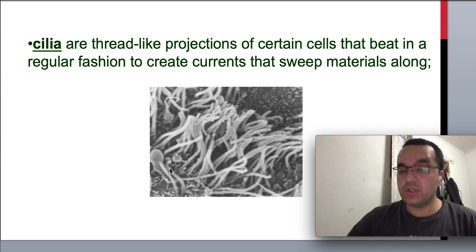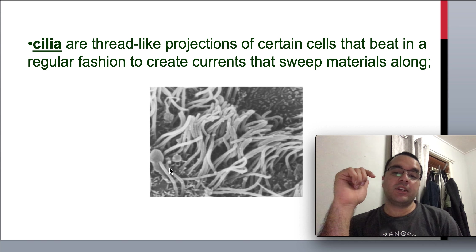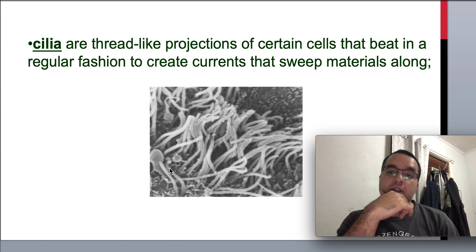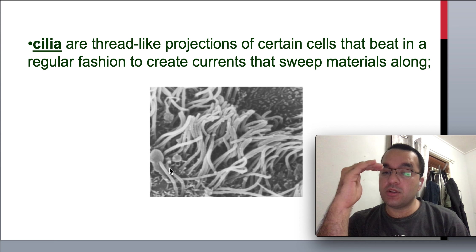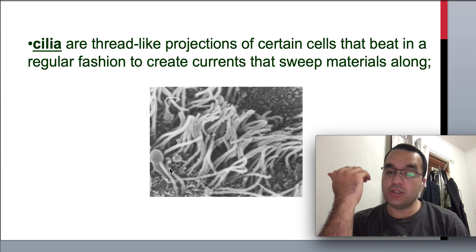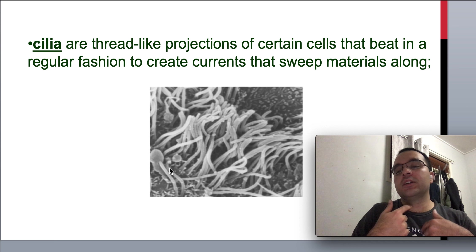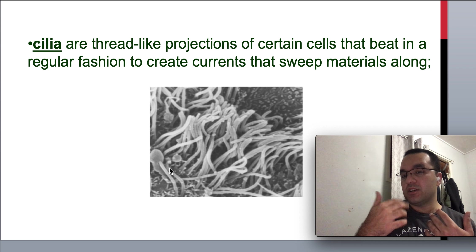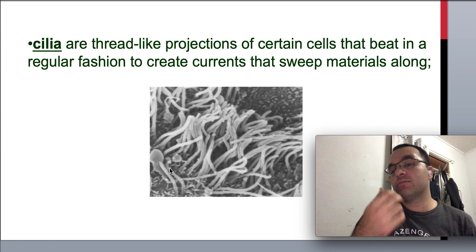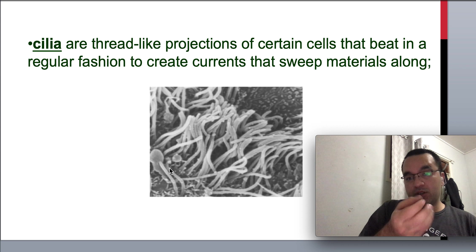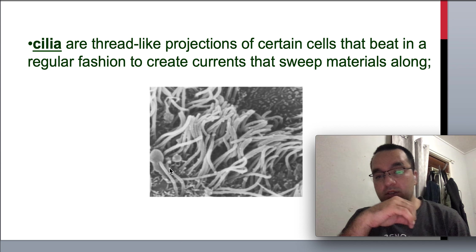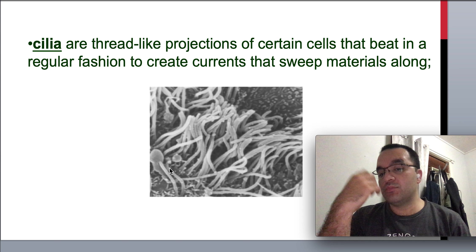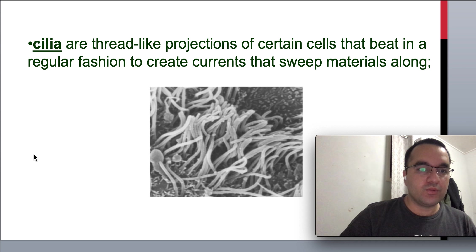Cilia are thread-like extensions of the cell membrane that beat in a regular fashion to create currents that sweep material along. Cilia are not present on every cell — only on specialized cells. For instance, cells in the trachea have cilia: if anything enters the trachea, the movement of the cilia brings it up, which is why we cough to expel it. Another example is the mucus in our nose, which moves through the movement of cilia.